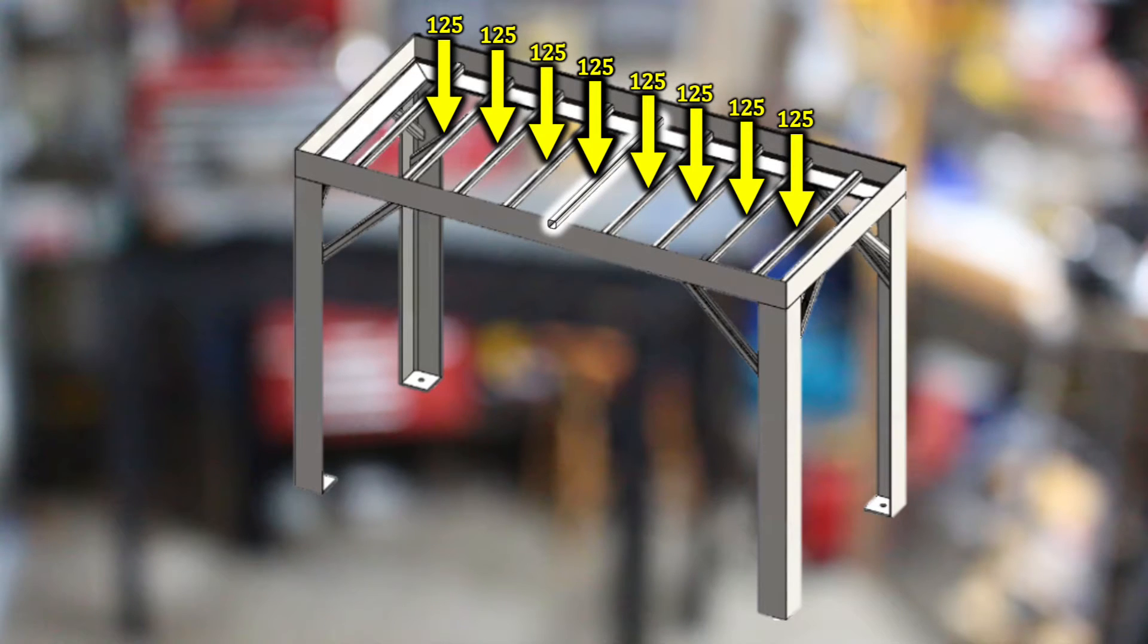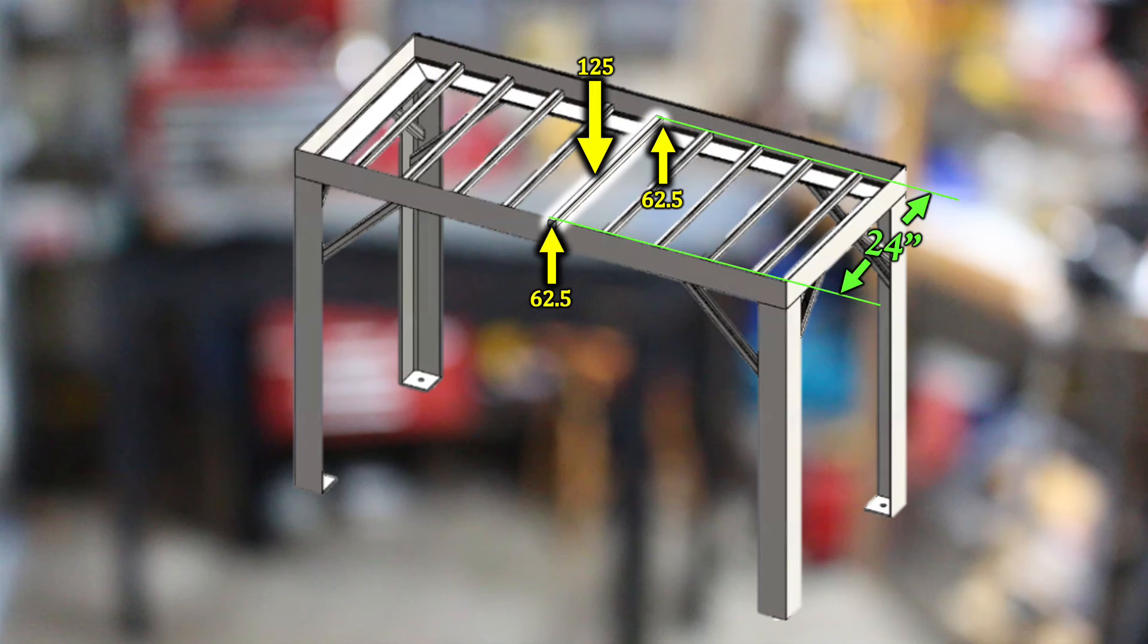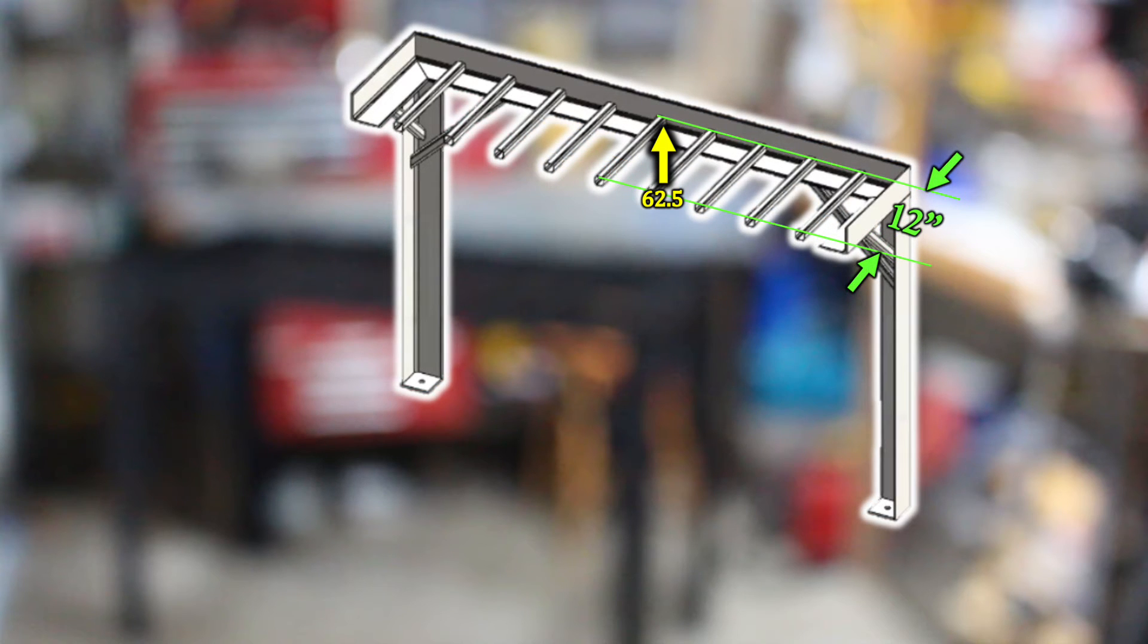Looking at one of those pieces of square tube, we see it has internal reactionary forces at either end of half of 125, that's 62 and a half pounds. Taking an imaginary cut, we'll call it point A, through the middle of that tube, we cut the body free from the rest of the structure.